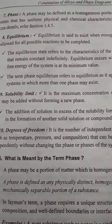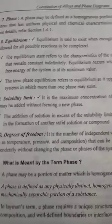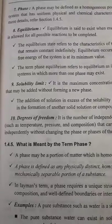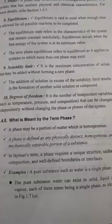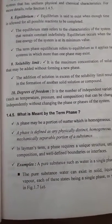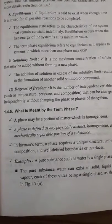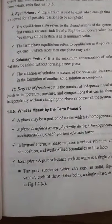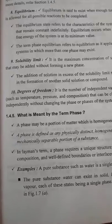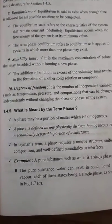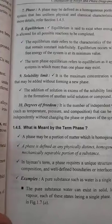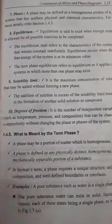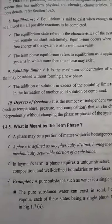Up to the limit where the salt is getting mixed is called the solubility limit. Degrees of freedom refers to the variables — such as temperature, pressure, and composition — that can be changed independently without changing the number of phases in the system. That is, we can alter temperature, pressure, or composition such that the phase of the system does not change. That is the degrees of freedom.